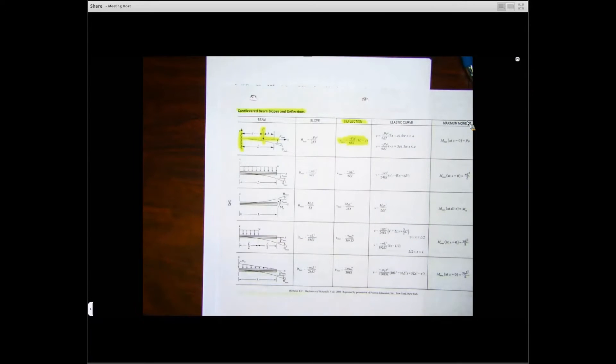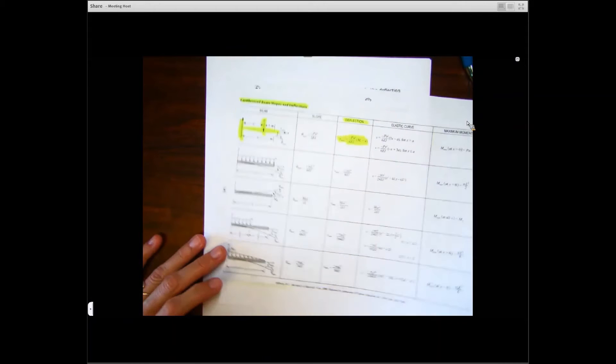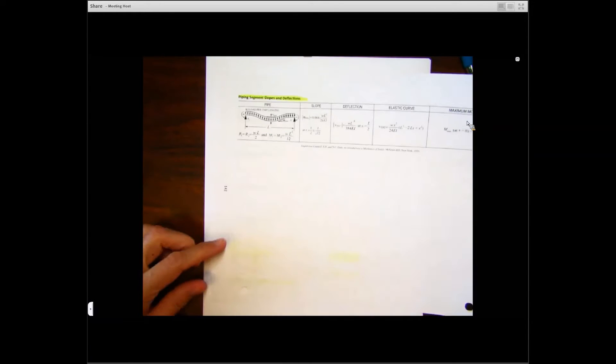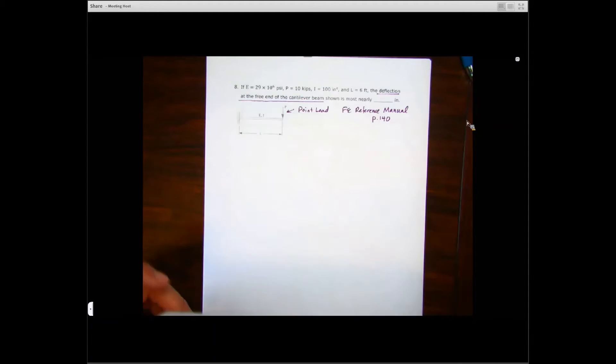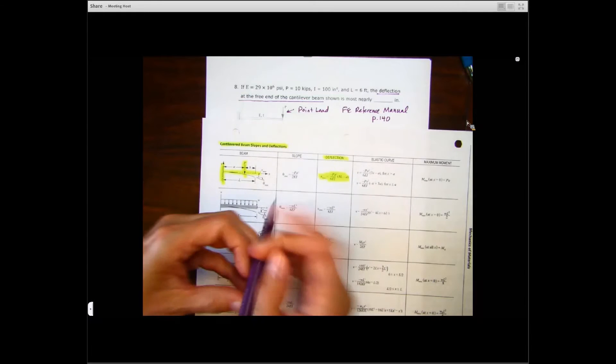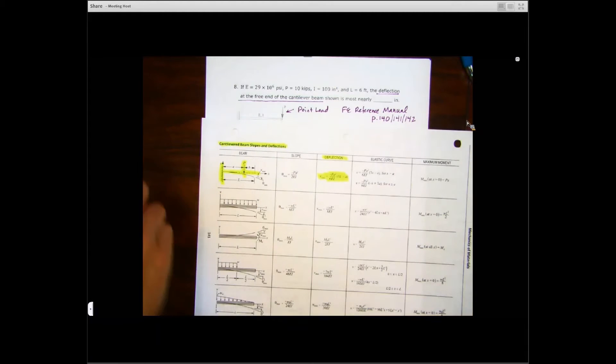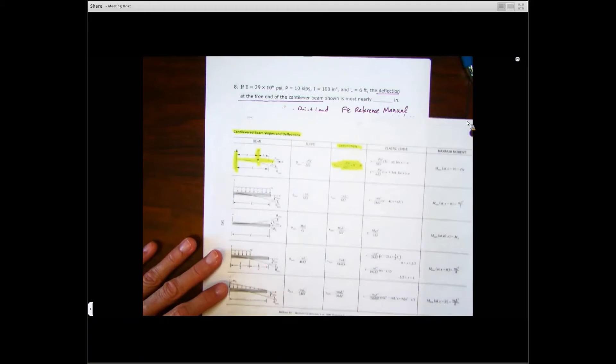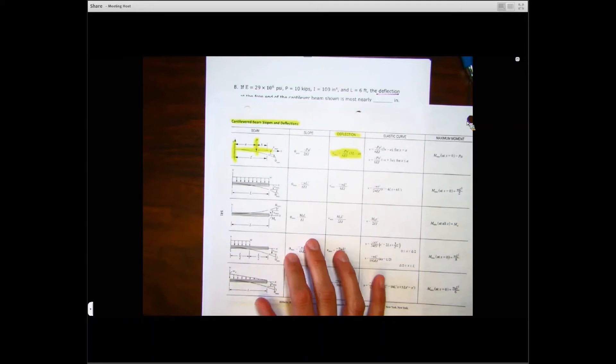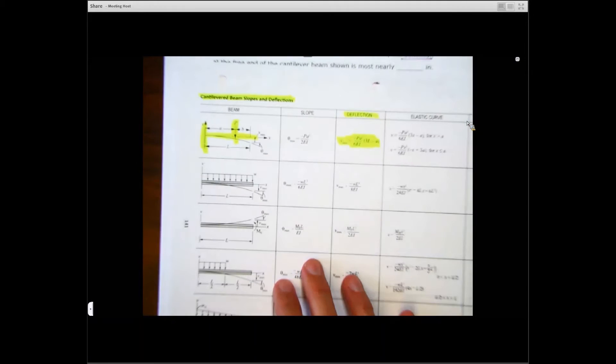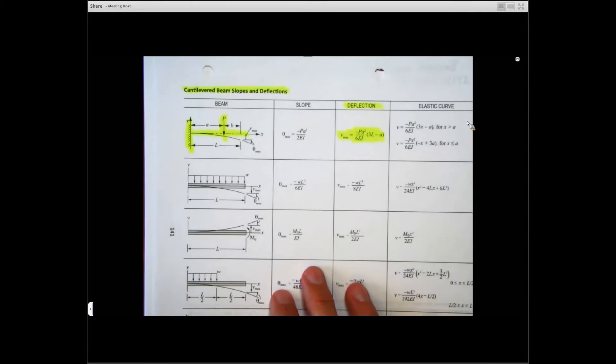But what we're interested in here are the cantilever beams. Also, just to show you on 142, there's piping segment slopes and deflections as well. So 140, 141, 142 is going to have this type of information. I would definitely look over those diagrams because they can be super helpful when you need to solve a problem. You don't have to derive a formula for this.